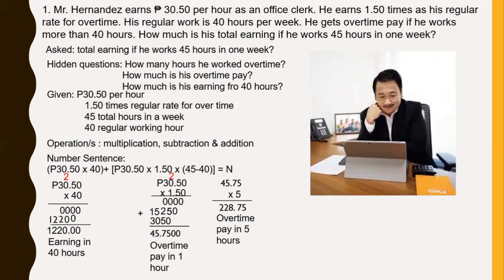What we're asking is: how much is total earnings for 45 hours in 1 week? So we have 1,220 pesos plus 228 pesos and 75 centavos. The answer is 1,448 pesos and 75 centavos. This is the earnings for 40 hours, this is the earnings for overtime of 5 hours. So this answer will be total earnings in 45 hours. This is the answer for our example problem.